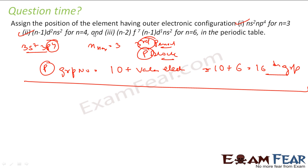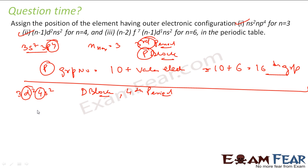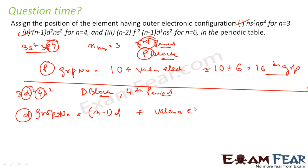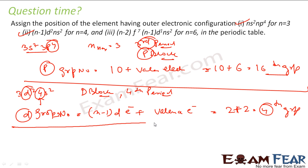For the second example, n equals 4, so n minus 1 becomes 3: the configuration is 3d² 4s². Since this is d-block, the maximum value of n is 4, so it is the 4th period. For d-block, group number equals the number of electrons in d orbitals plus valence electrons in s: 2 plus 2 equals 4. So it is 4th period, d-block, group 4.